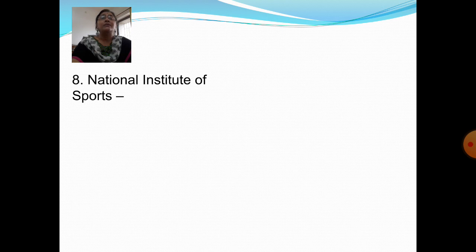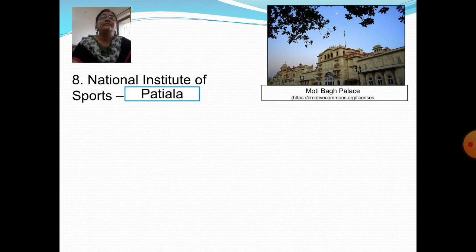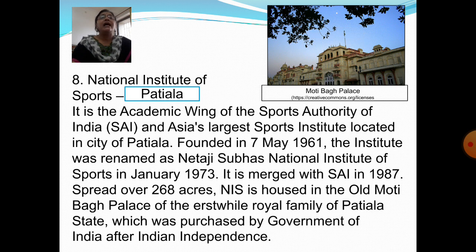Next question: Where is the National Institute of Sports located? Answer: Patiala. It is the academic wing of the Sports Authority of India and Asia's largest sports institute, located in the city of Patiala. Founded on 7 May 1961, the institute was renamed as Netaji Subhas National Institute of Sports in January 1973. It merged with the Sports Authority of India in 1987. Spread over 260 acres, it is housed in Old Moti Bagh Palace of the erstwhile royal family of Patiala state.